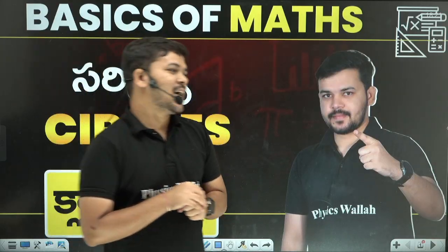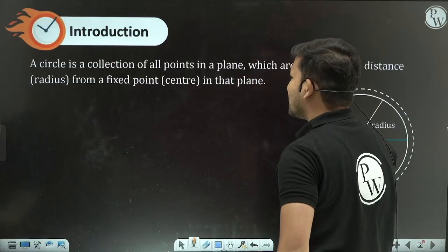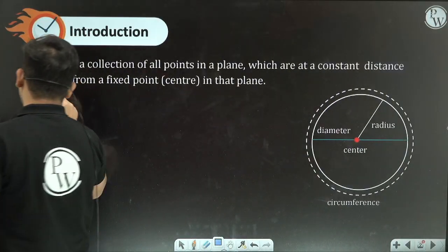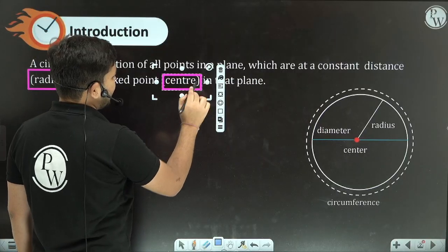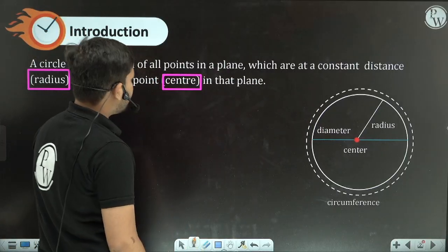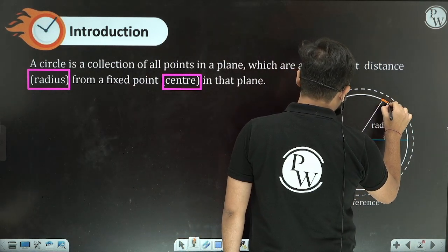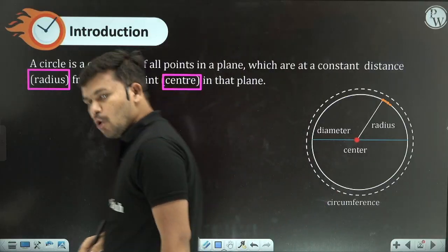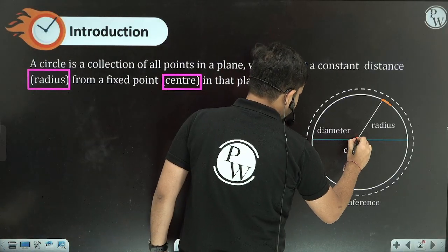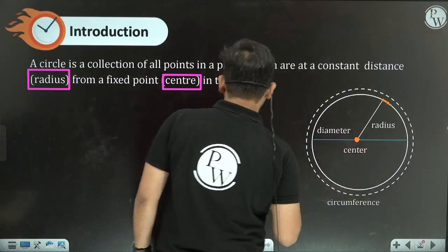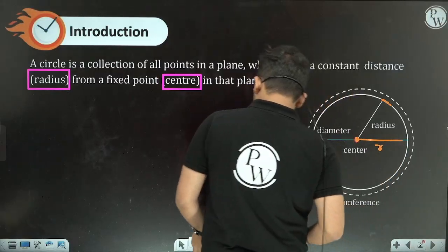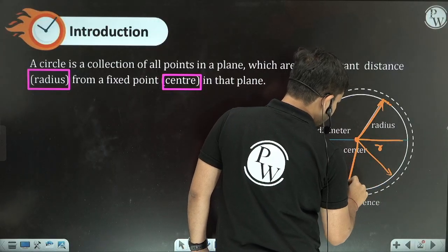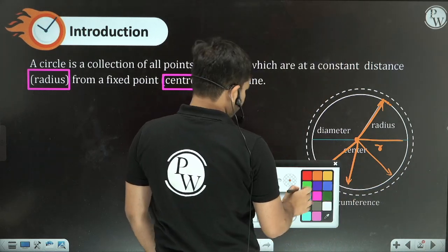Without any delay, let's get started with Circles. A circle is the collection of all points in a plane which are at a constant distance — called the radius — from a fixed point called the center. So every point on the circle is at the same distance from the center, and all those distances are called the radius.